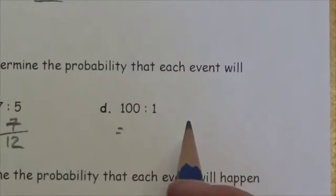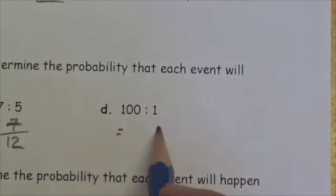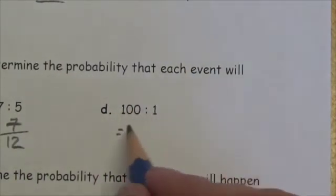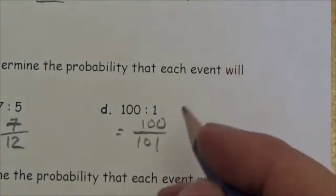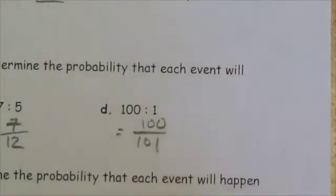And a hundred to one. Now that's a good deal here. Hundred successful events, one failure event. That's a hundred and one total events, but there's a hundred successful events, so it's 100 out of 101. That's the probability of success.